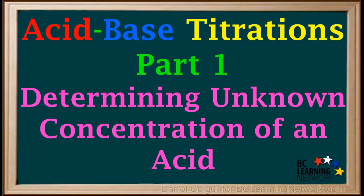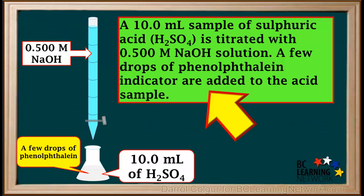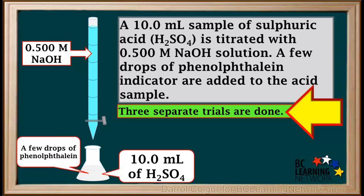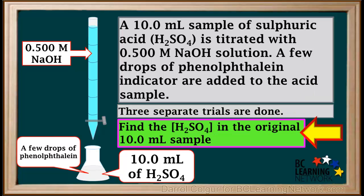A titration procedure can be used to find the concentration of an acid. We'll give you an example and work through the steps in the calculations. A 10 milliliter sample of sulfuric acid, H₂SO₄, is titrated with 0.5 molar NaOH solution. A few drops of phenolphthalein indicator are added to the acid sample. Three separate trials are done, and we're asked to find the concentration of H₂SO₄ in the original 10 milliliter sample.